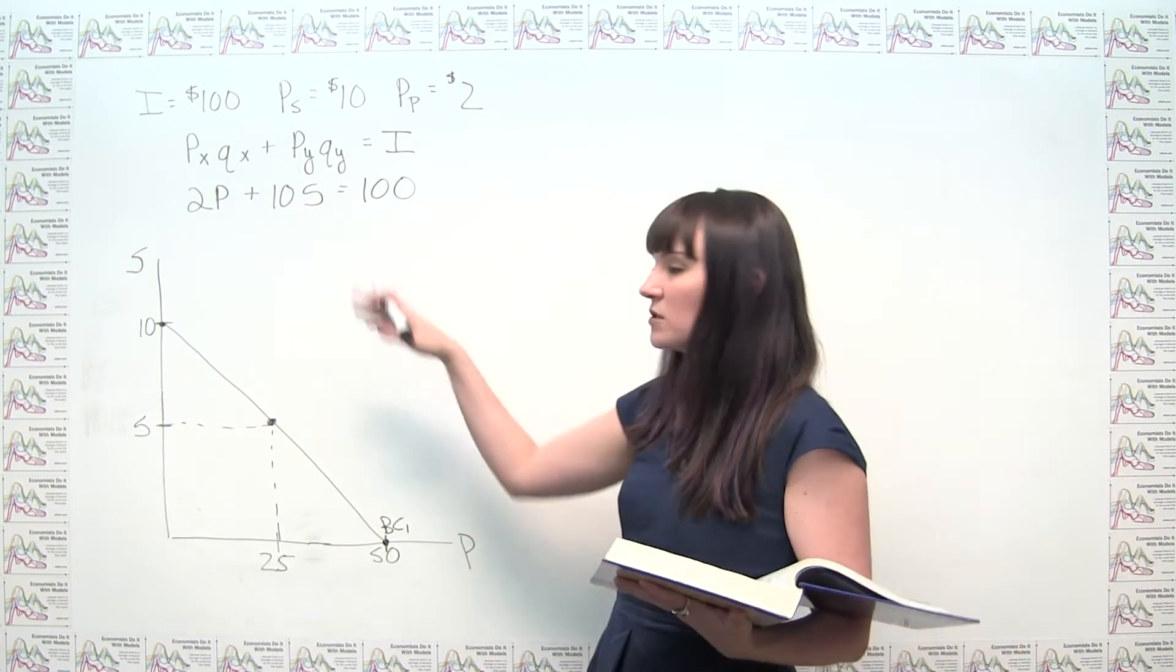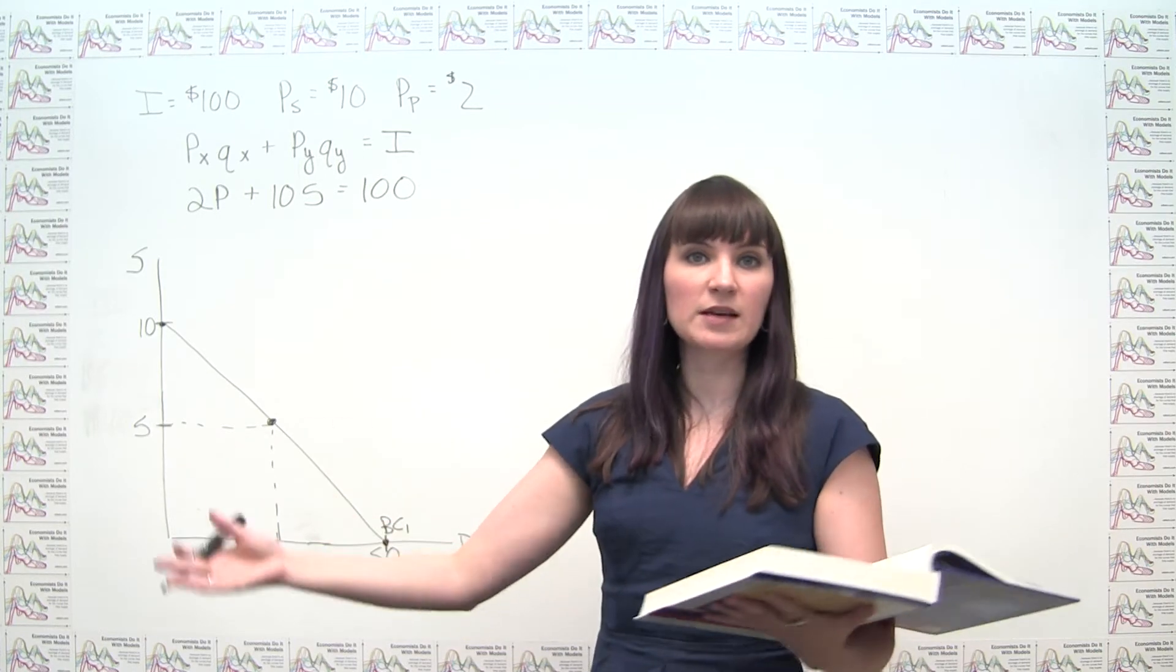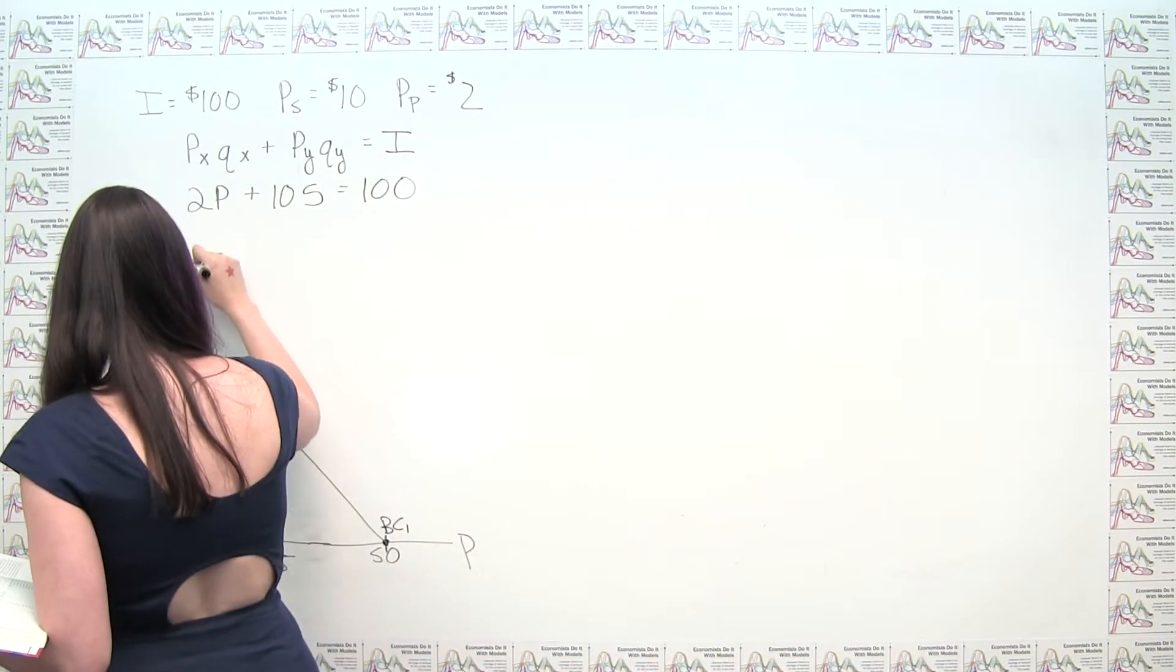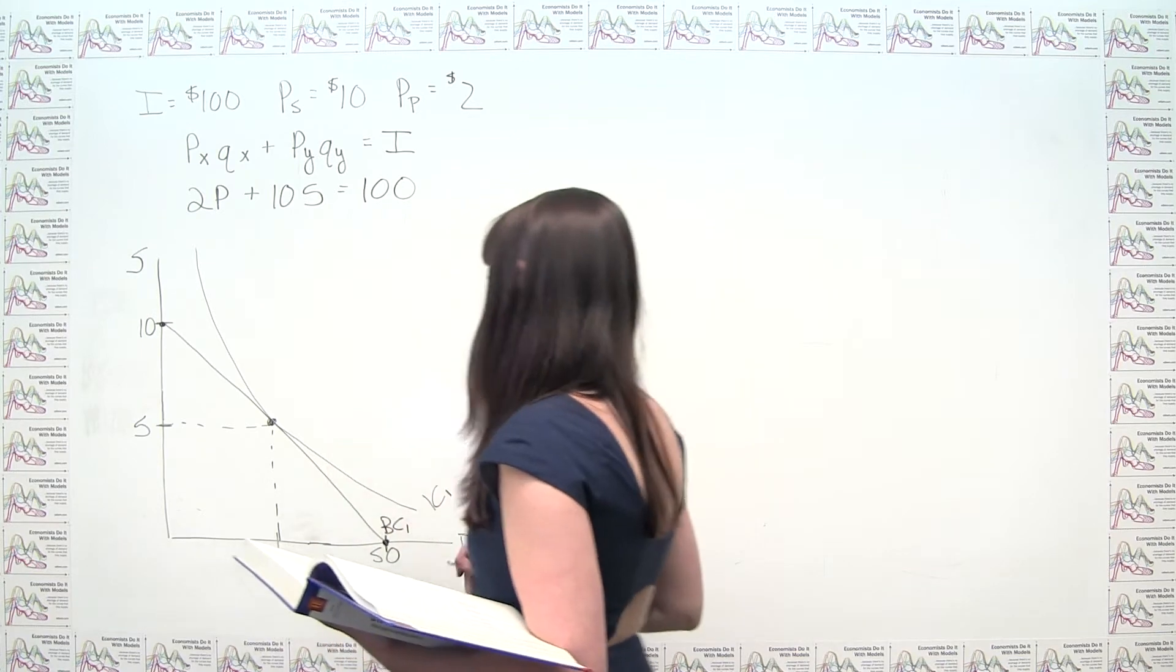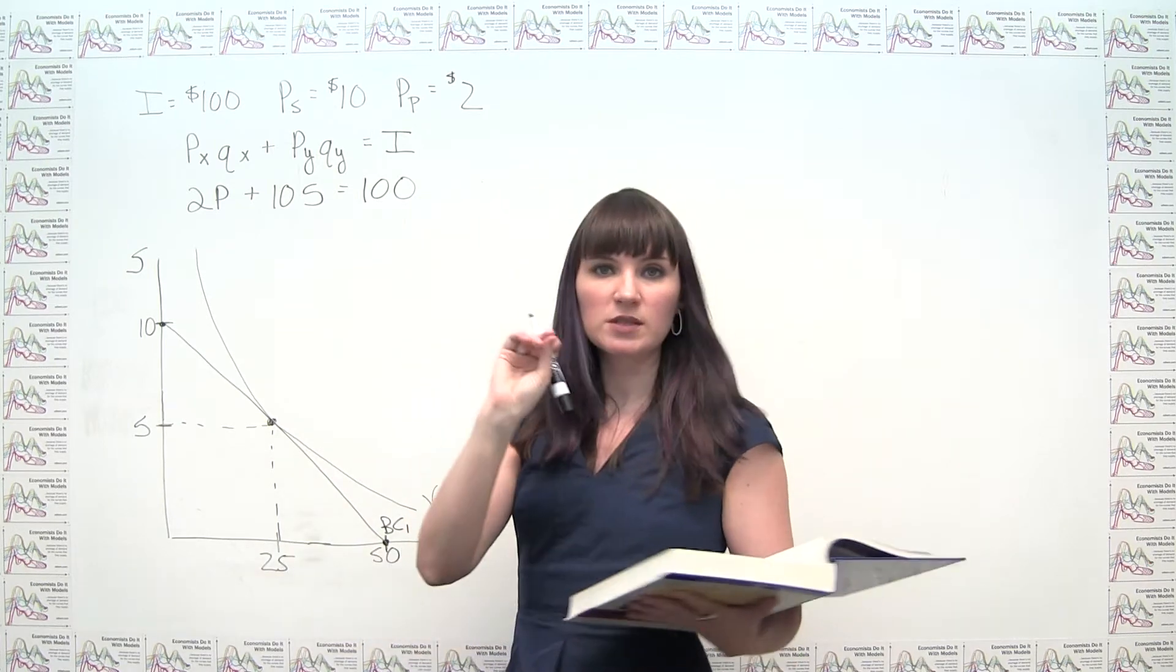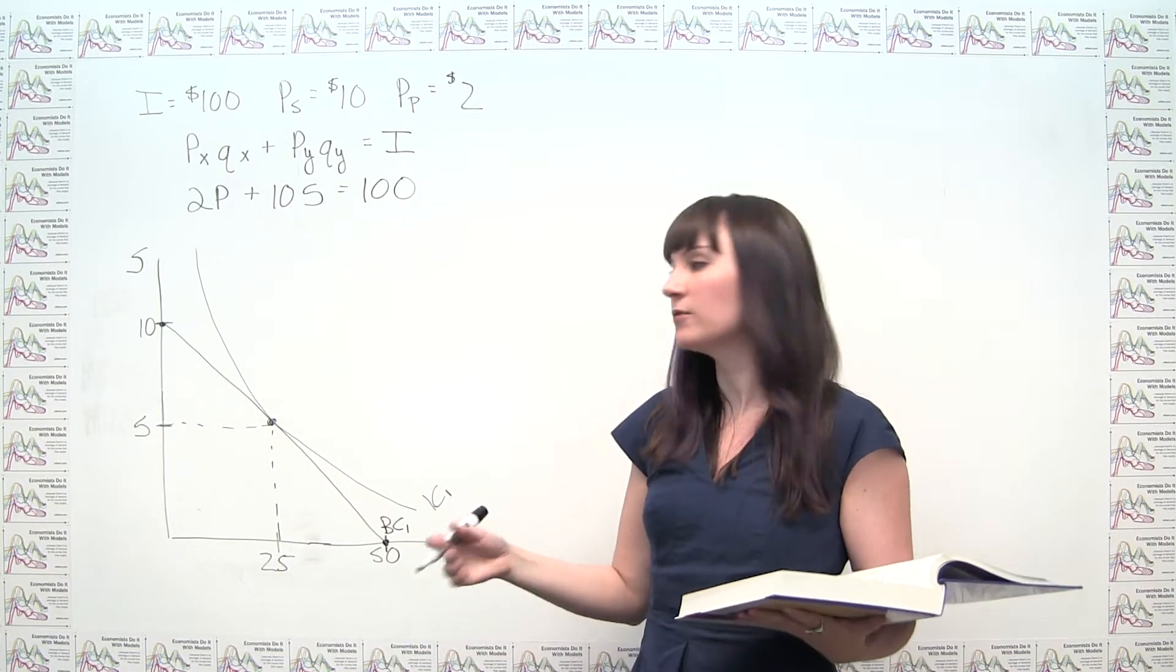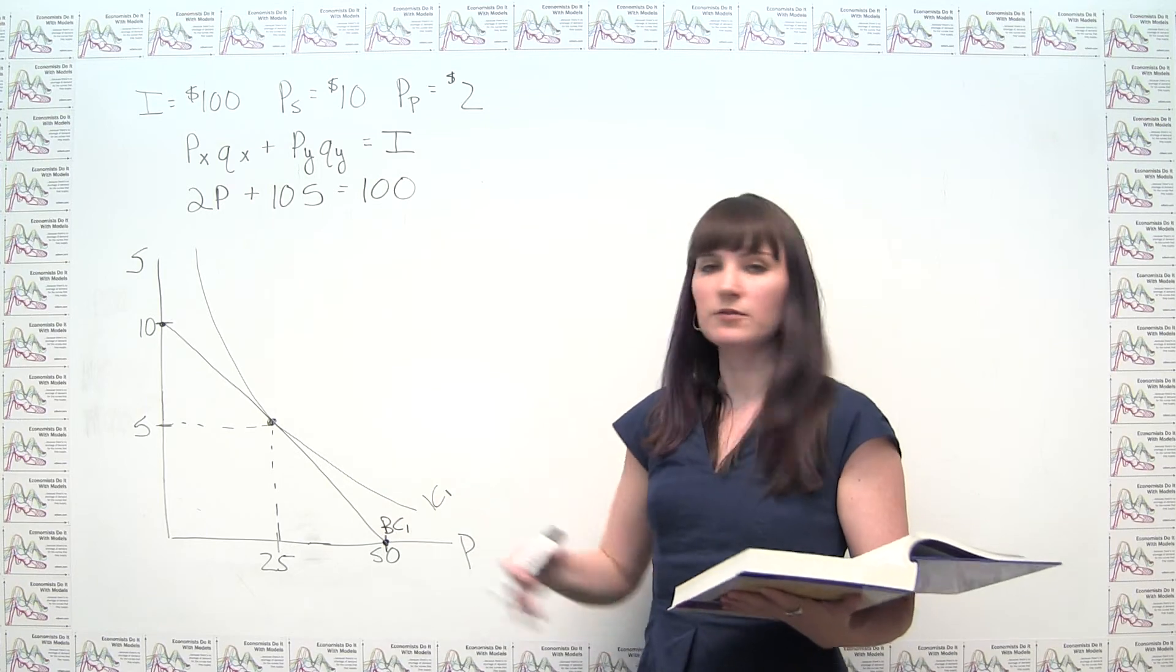So we have to draw an indifference curve that's tangent at this point. And we know a few things about indifference curves. We know that they slope downwards, because we have trade-offs between one good and another. If we're indifferent between two points and we have more of one good, we must have less of the other good. And we also know that they're bowed in towards the origin. So if we have a typical looking indifference curve, we would draw something that looks like this here. Let's call this IC1 for indifference curve. And to say that something is tangent, it means that it just touches at that one particular point, so that it's basically just kissing the budget line here.